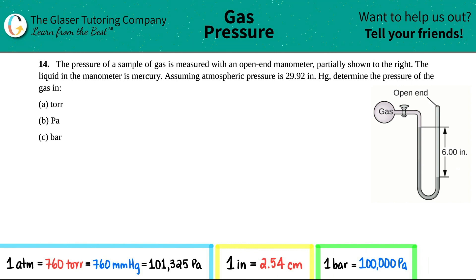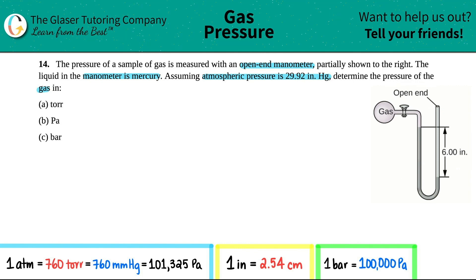Number 14: the pressure of a sample of gas is measured with an open-ended manometer partially shown to the right. The liquid in the manometer is mercury. Assuming the atmospheric pressure is 29.92 inches of mercury, determine the pressure of the gas in torr, pascal, and bar.